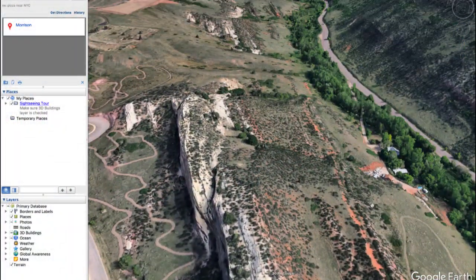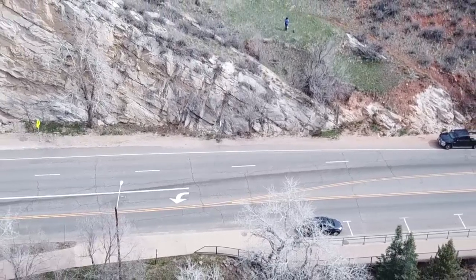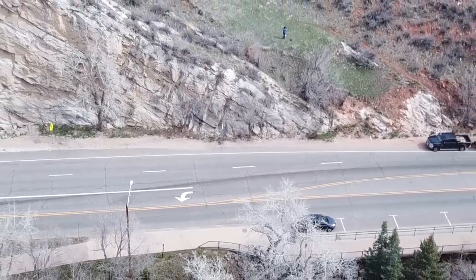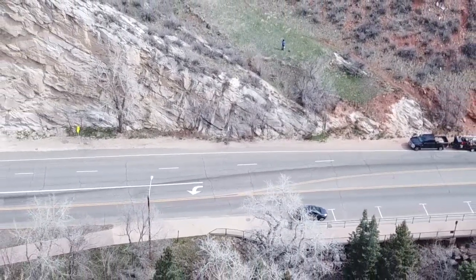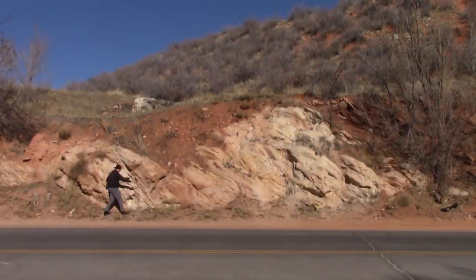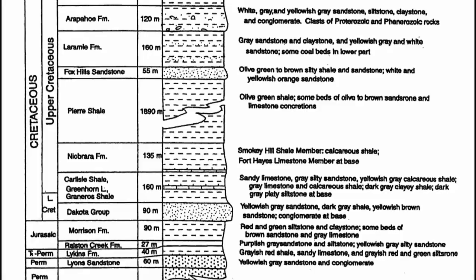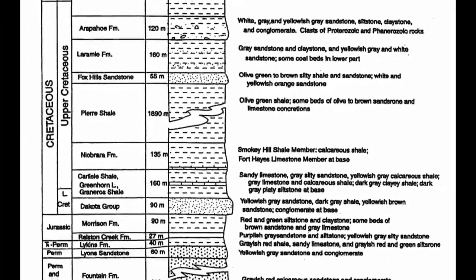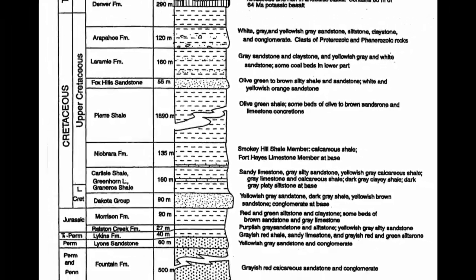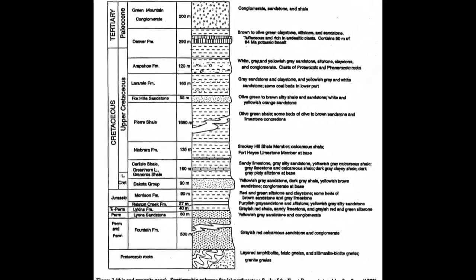As I do my preliminary investigations, I note there is a good road cut exposure up Bear Creek Avenue which I can start with to get a local stratigraphic column. In my preliminary internet investigations I found a stratigraphic column already produced for the Morrison area, so that should be a big help.